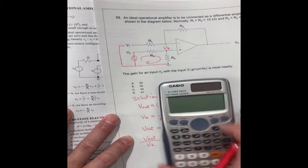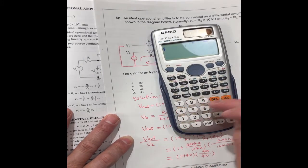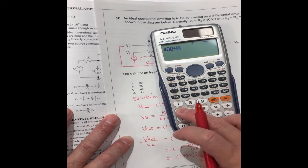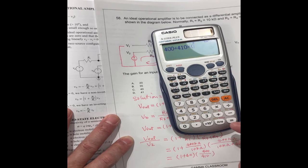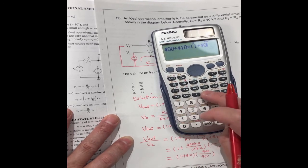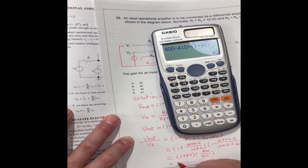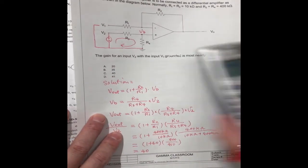We can do the calculation. 400 kΩ divided by 410. Bracket, 1 plus 40, times 40. This is 40.